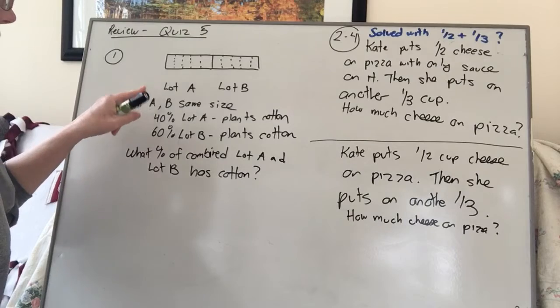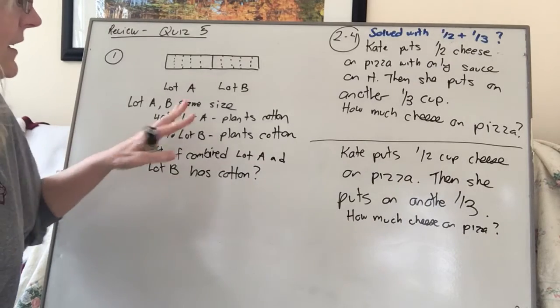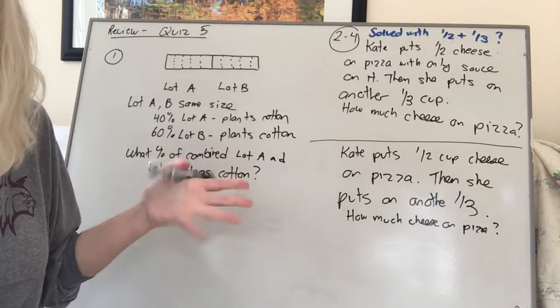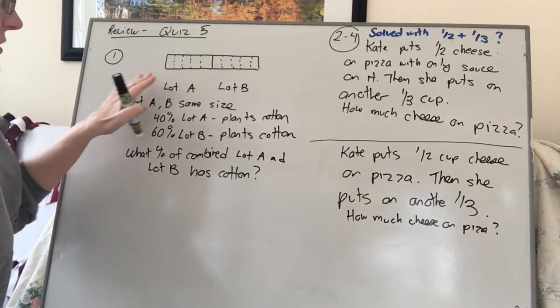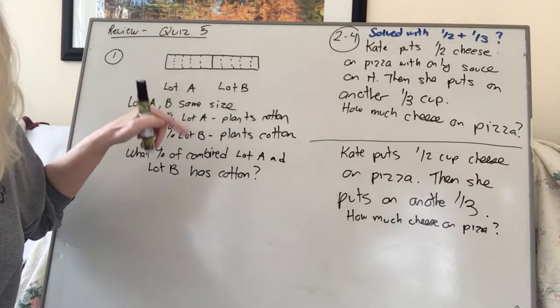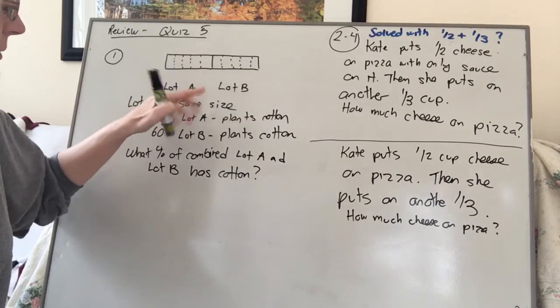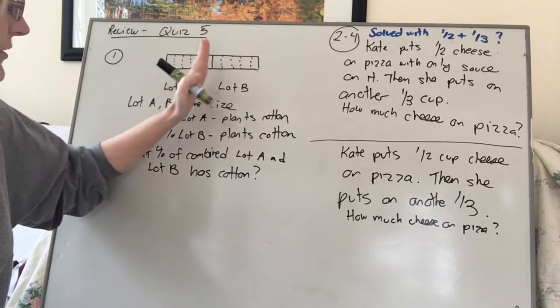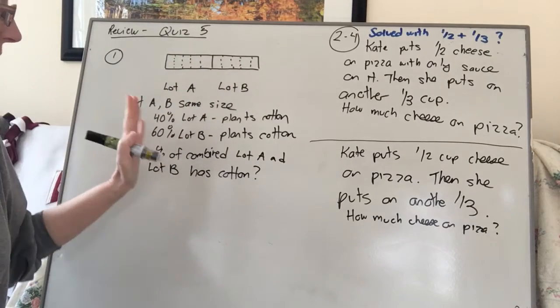This quiz has a few problems on it. It has to do with fractions, fractional parts of things. The first question talks about two different lots of land, lot A and lot B. So this is A from here to here, and this is B from here to here, and they're the same size.